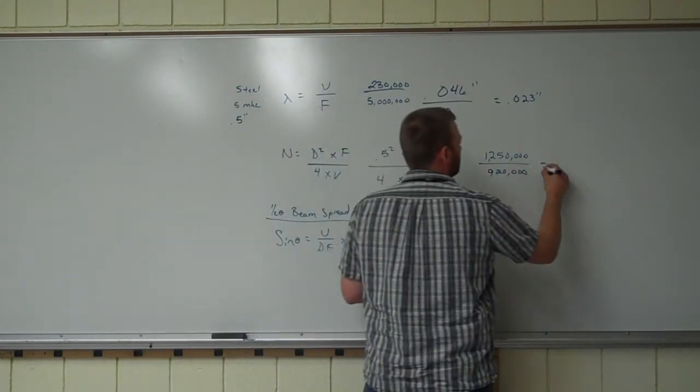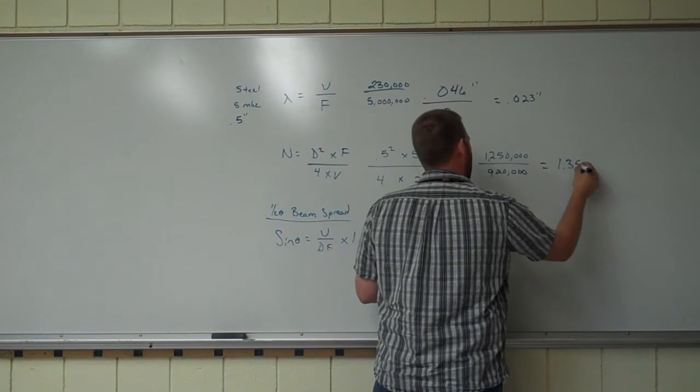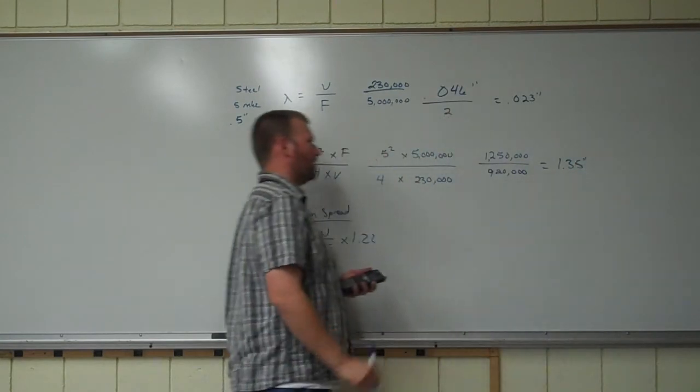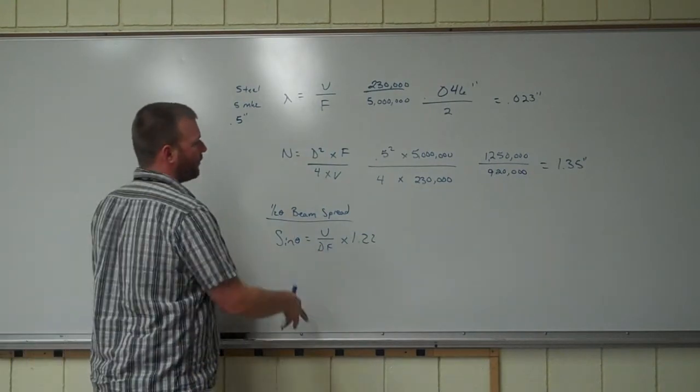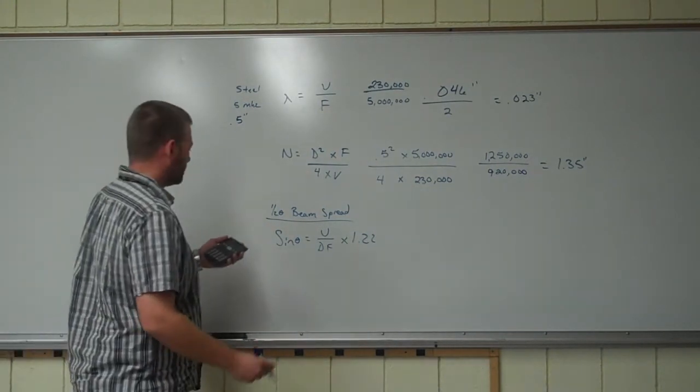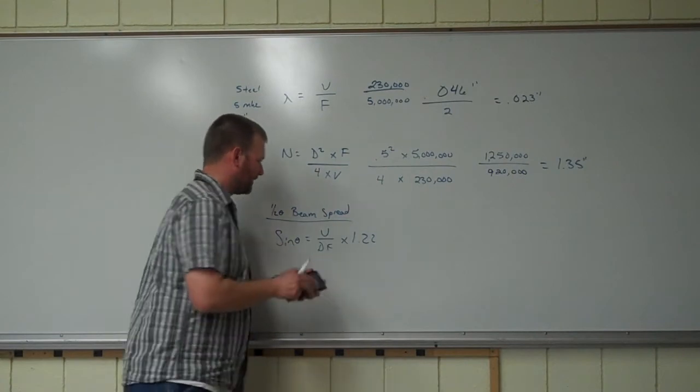Divide those out. 1,250,000 divided by that. That tells me this near field, 1.35 inches long. Now the beam spread. We're just working the formulas and then I'm going to draw a picture and show you what this is all about. So if we have this here, let me get rid of that.